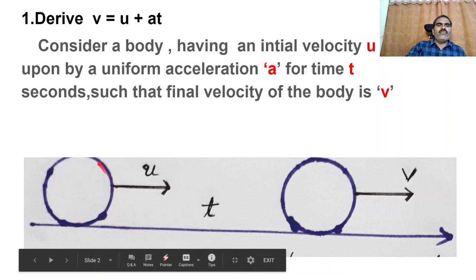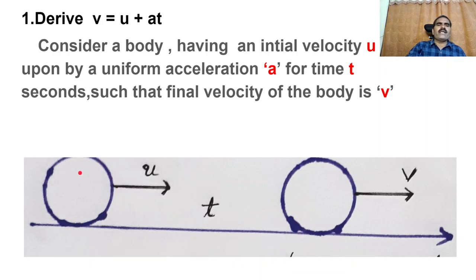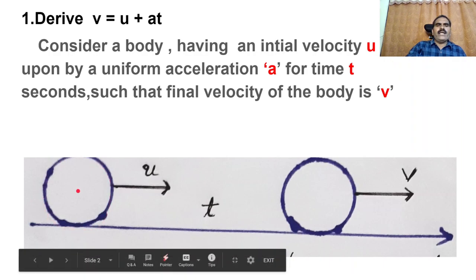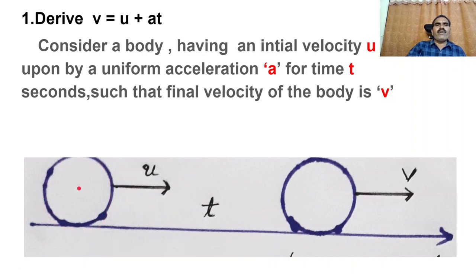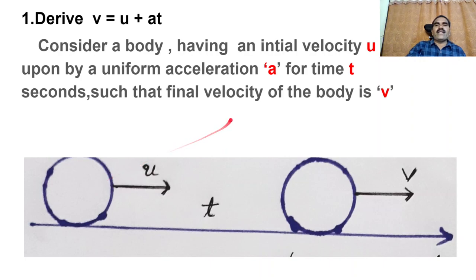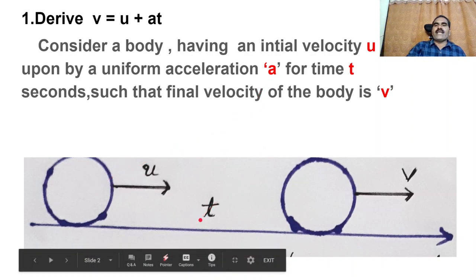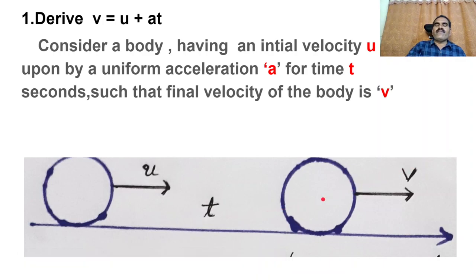Consider a moving body — that may be a scooter, a cycle, a bus, a car, whatever it may be. This moving body is moving with an initial velocity U, acted upon by a uniform acceleration A for time T seconds, so that V is the final velocity.